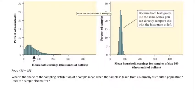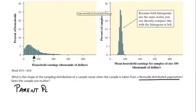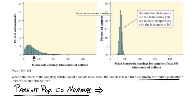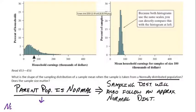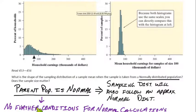The question is: what is the shape of the sampling distribution of a sample mean when the sample is taken from a normally distributed population? I like to think about it as parents — if your parent population is normal, I'm going to make a pretty good guess that you're going to be normal as well. If your parent population is normal, then the sampling distribution is going to be normal automatically. I don't care what the sample size is. If it comes from a normal parent population, the sampling distribution is going to be normal. There are no further things we have to check.